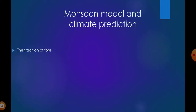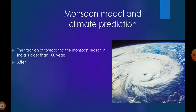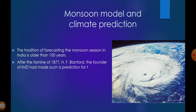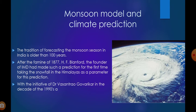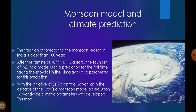Monsoon model and climate prediction. The tradition of forecasting the monsoon season in India is older than 100 years. After the famine of 1877, H.F. Blankford, the founder of IMD, made the first such prediction using snowfall in the Himalayas as a parameter. With the initiative of Dr. Vasandrav Gavarikhar in the decade of the 1990s, a monsoon model based upon 16 worldwide climatic parameters was developed. This model was in use from 1990 to 2002.